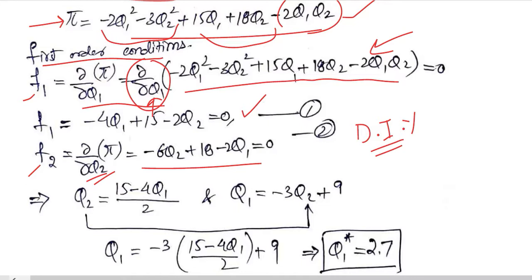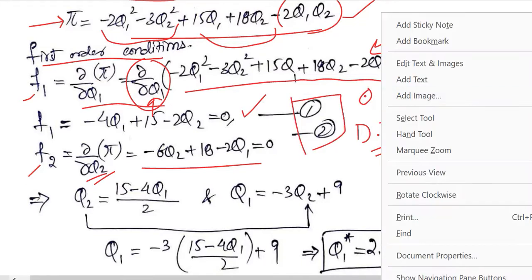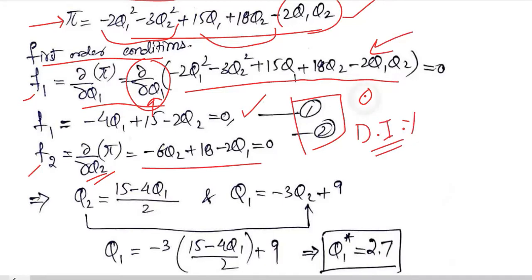So we have now two equations and both of them are in terms of Q1 and in terms of Q2. We can solve them simultaneously and this will be the process of simultaneous equations.